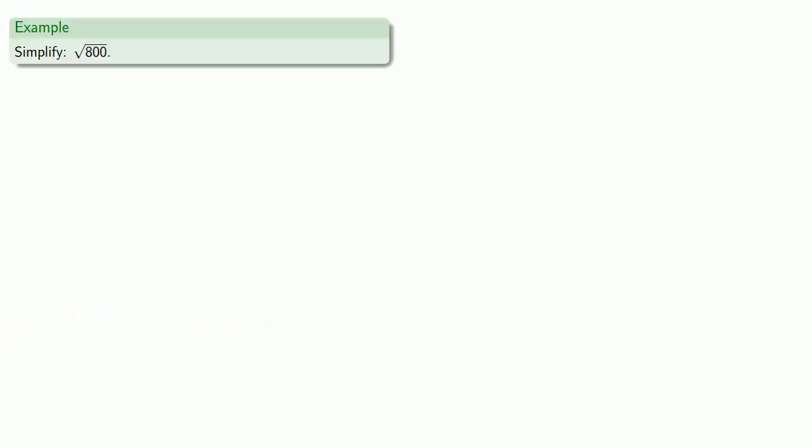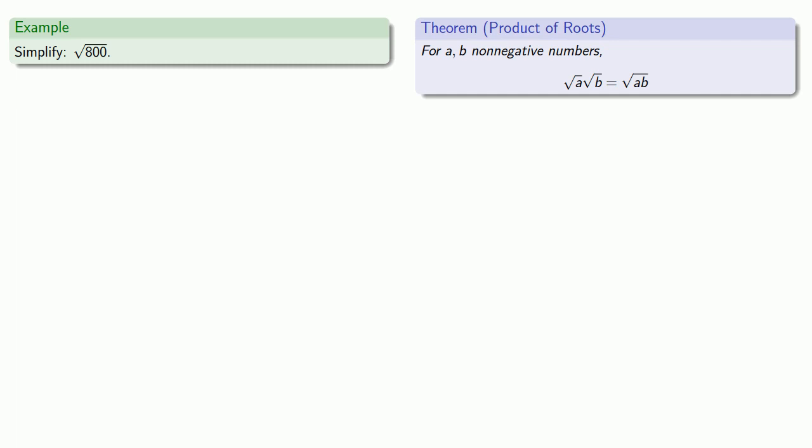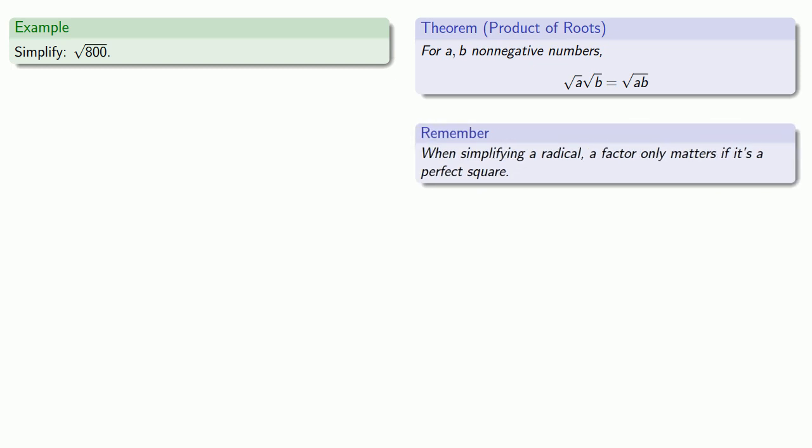So for example, suppose we want to simplify the square root of 800. Now it's useful to keep in mind that our simplification relies on our ability to write a square root of a product as the product of the square roots, where at least one of the square roots can be reduced to a whole number. And what this means is that when simplifying a radical, a factor only matters if it's a perfect square factor.